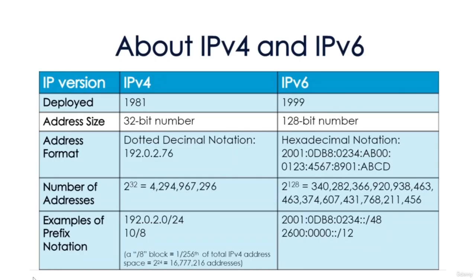IPv4 is Internet Protocol version 4, commonly called just IP. It is a simple protocol designed to carry data across networks. It is so simple that it requires a helper protocol called ICMP. IP is connectionless and unreliable — it provides best-effort delivery of packets. If connections or reliability are required, they must be provided by a higher-level protocol carried by IP, such as TCP.